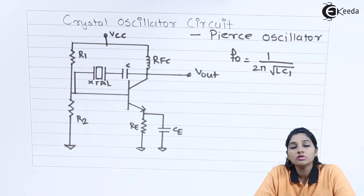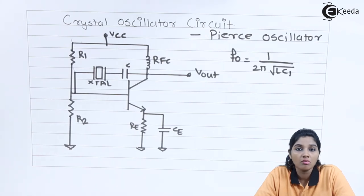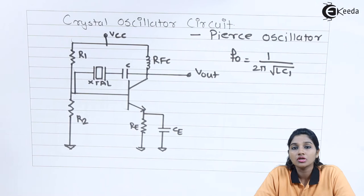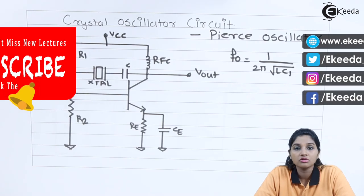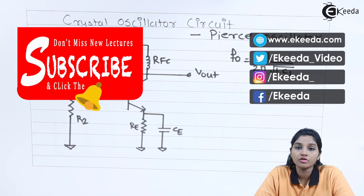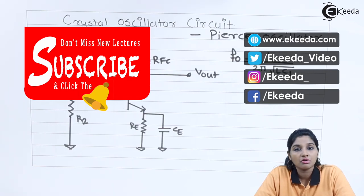So this is what about the Pierce crystal oscillator, which is most commonly used oscillator amongst others, which has frequency as a series resonant frequency, that is f equals 1 upon 2π square root of LC1, in which the reactance of inductor is equal to reactance of C1. So I hope you understand the circuit of Pierce crystal oscillator. Thank you very much for watching this video. Stay tuned to Ikeda. Subscribe Ikeda. Thank you. Bye.